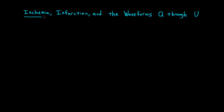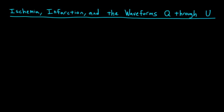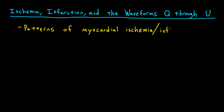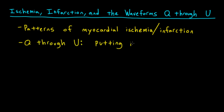Today we're going to talk about ischemia, infarction, and the waveforms Q through U. In part one of this video, we'll review the characteristic EKG patterns of myocardial ischemia and infarction. Then we'll talk about a practical way to look at the waveforms Q through U when you're systematically reading an EKG. We'll go over what exactly you should look for so that you can come to the right diagnosis.